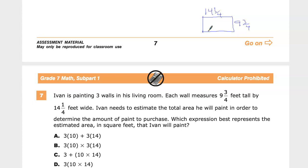Ivan needs to estimate the total area he will paint in order to determine the amount of paint to purchase. Usually you kind of want to go up with those numbers because you want to have excess left over in the real world. In this case, we're not doing that. We're going to do a mix, but whatever. Which expression best represents the estimated area in square feet that Ivan will paint?